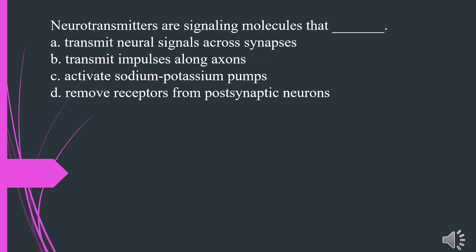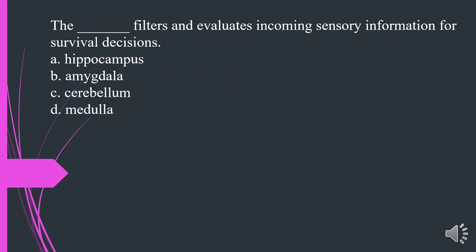Neurotransmitters are signaling molecules that: A. Transmit neural signals across synapses. B. Transmit impulses along axons. C. Activate sodium-potassium pumps. D. Remove receptors from postsynaptic neurons. The answer is A. Transmit neural signals across synapses.